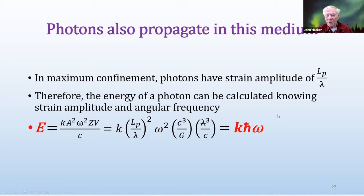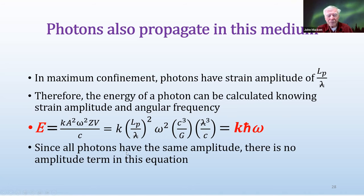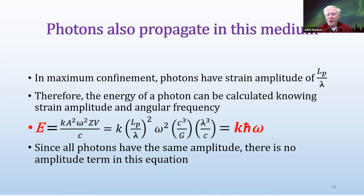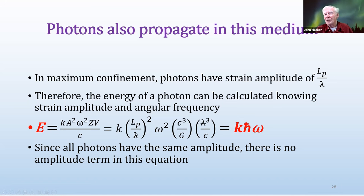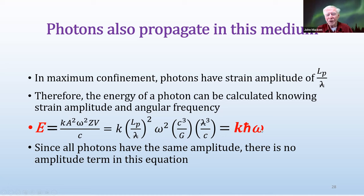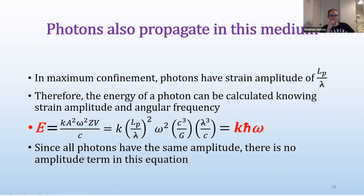So the energy of a photon is simply its frequency times Planck's constant — E = ℏω. This gives the exact photon energy. Anyone working with lasers knows this as a first-day fact. Since all photons have the same displacement amplitude, there is no amplitude term in this equation — only frequency determines energy.